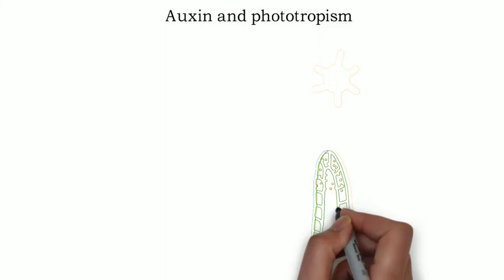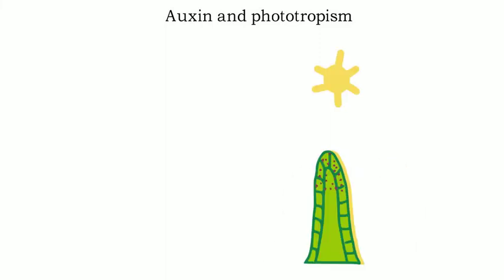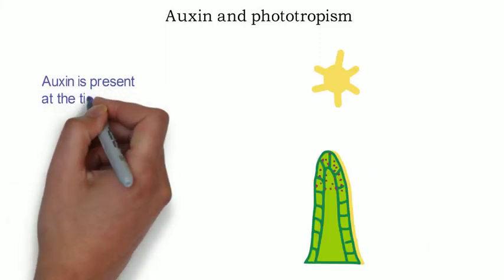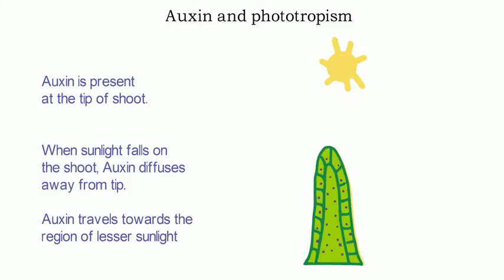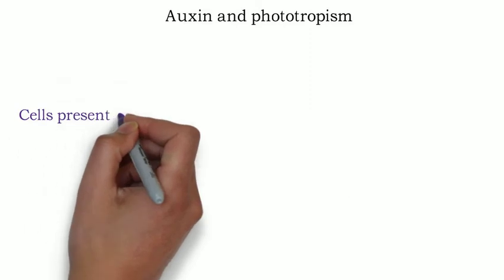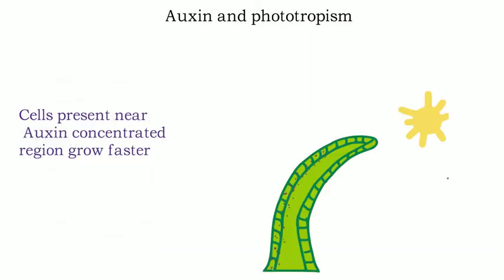Auxin is normally found at the tip of the shoot. When sunlight falls on the shoot, auxin starts to diffuse gradually and moves towards the region of lesser sunlight. Cells present near this region grow faster, resulting in the shoot bending towards the light. Similarly, auxin shows positive geotropism in roots, and roots grow deep into the soil.